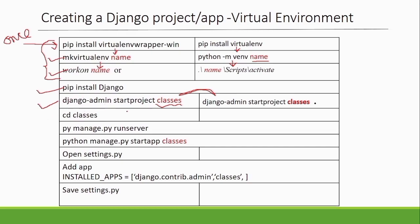If you created the project with the first command, you will navigate into the folder with 'cd [project name]'. If you used the dot command, you don't need to do that. To verify the project runs, use the command: py manage.py runserver. If your project is working properly, stop the server with Ctrl+C, then start creating the application. The command to create an application is: py manage.py startapp [app name].